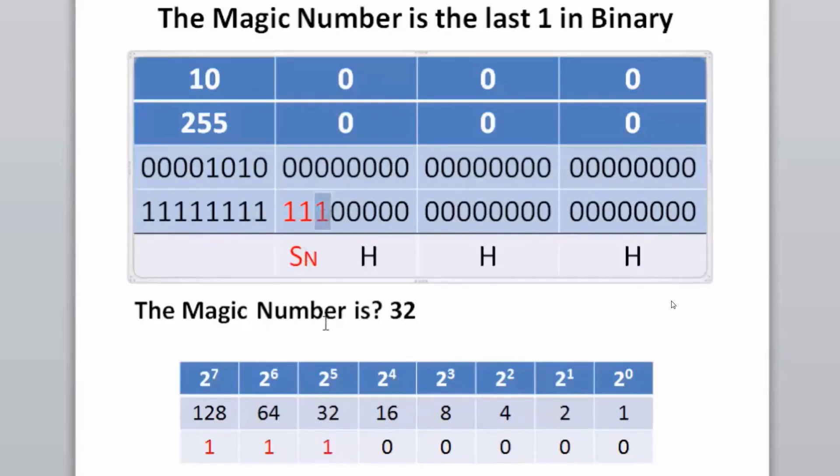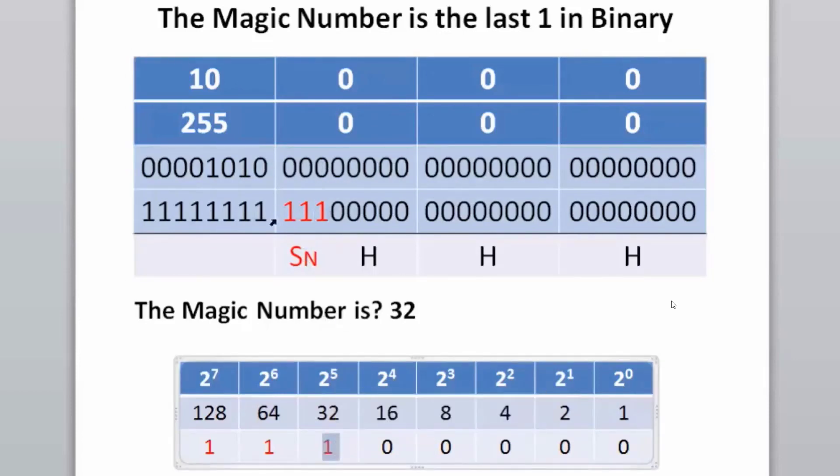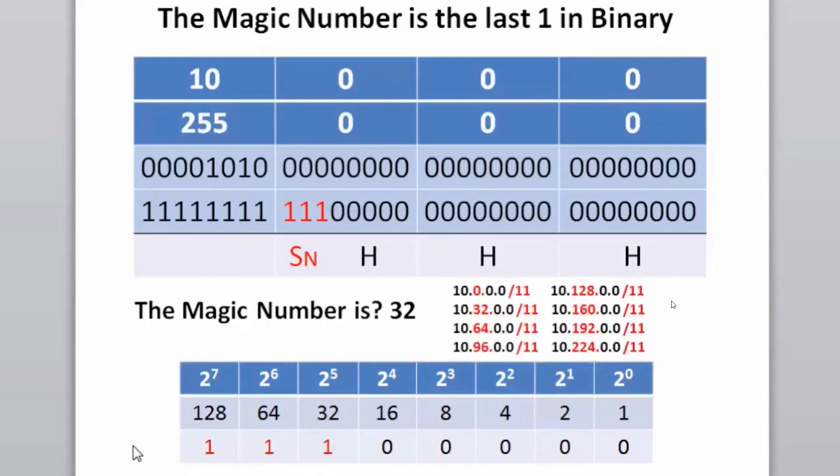The last one in the subnet mask is still in the 32s place. If we look at this 8-bit grouping in this octet right here, the last one is still in the 32s place, so the networks will go up by 32. The networks are the 10.0, 32, 64, 96, and they're going up by 32, but in the second octet. The only difference is now we have a lot more host addresses. We have 8, 16, 21 zeros for hosts, which means there's over 2 million hosts per subnet.